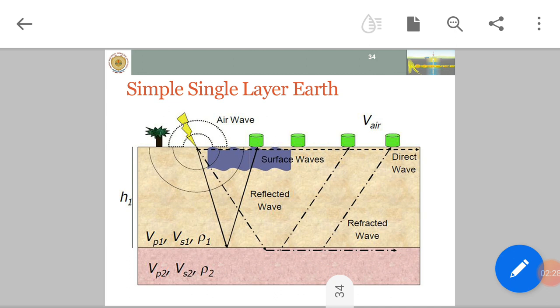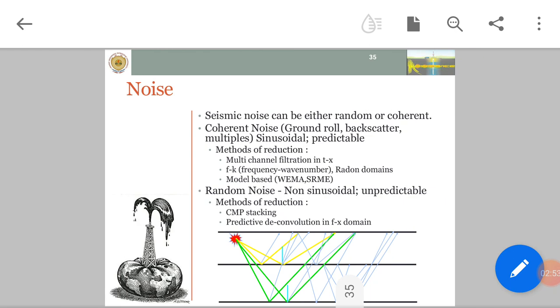In reflection, we measure the two-way time. One way is the time required for energy to travel from source to reflecting boundary and come back to geophone. All these data were acquired in SEC-D format which is time sequential data. The main objective of data processing is to convert it into trace sequential data. Seismic noise can be either random or coherent. Coherent noise are ground roll, backscattered, multiple.